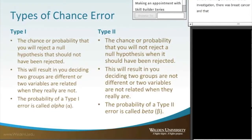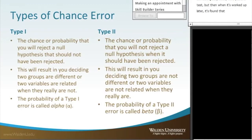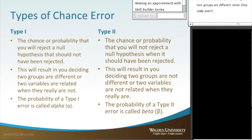The Type 1 error is the chance or probability that you will reject the null hypothesis when it should not have been rejected. In the mammogram example, the test was positive — something suspicious was found — but when worked up later, there was no breast cancer. That's a Type 1 error, also called a false positive. This results in deciding the two groups are different when they really aren't — you found a statistically significant difference when there truly was not one.